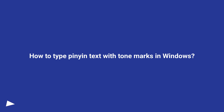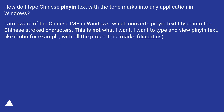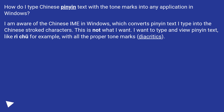How to type Pinyin text with tone marks in Windows? I want to type Chinese Pinyin text with tone marks into any application in Windows. I am aware of the Chinese IME in Windows, which converts Pinyin text I type into Chinese stroke characters. This is not what I want. I want to type Pinyin text, like 'ri chu' for example, with all the proper tone marks — diacritics.